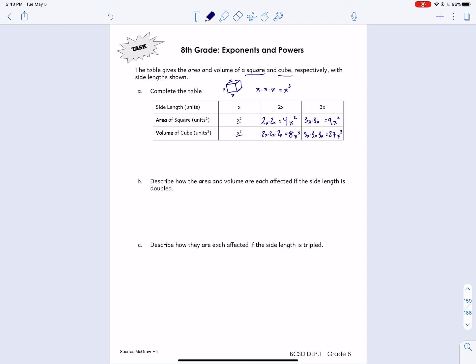So part B says, describe how the area and volume were each affected if the side length is doubled. So the side length, if the side length is doubled, that would be this middle column. This is doubled, right? Doubled is times 2, so 2 times x is 2x. So what happens to the area, and what happens to the volume? What did happen to the area? We look at the numbers. We have x squared in both of them. Let me see if we can highlight that. So x squared, so that stayed the same. So the thing that changed was the 4. So the area increased by 4 times, or times 4, the area increased by a factor of 4.